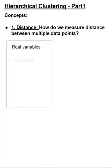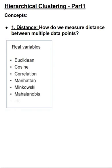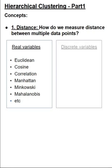For real value variables and continuous variables, we can choose between Euclidean, cosine, correlation, Manhattan, Minkowski, Mahalanobis, etc. For discrete variables, we may choose between Hamming, Jaccard, etc. Check out my distance measures video that goes into a deep dive on all these formulations and helps you choose the right distance for your given problem.